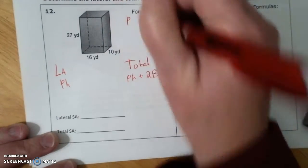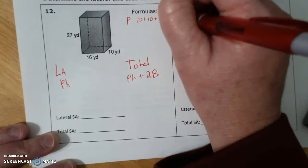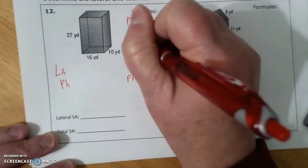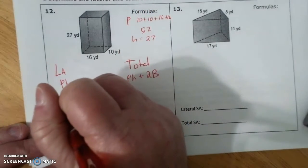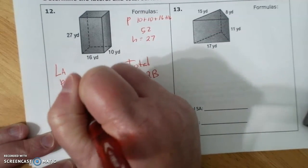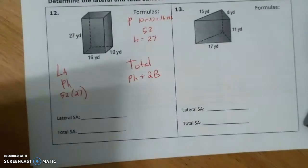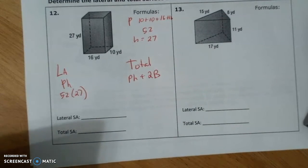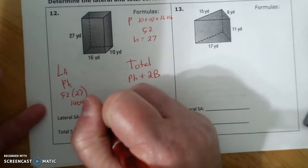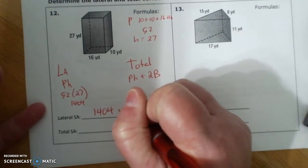Ph. 10 and 10 and 16 and 16, which is 52. H is 27. So that is 52 times 27. And 52 times 27 is 1404. So I have that, and it's yards squared.